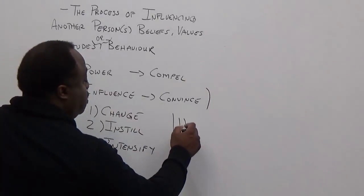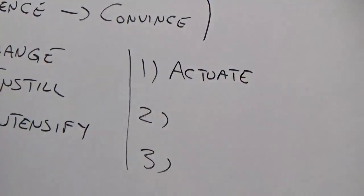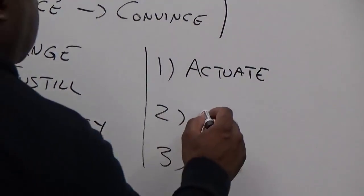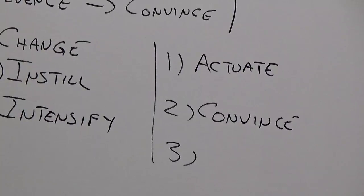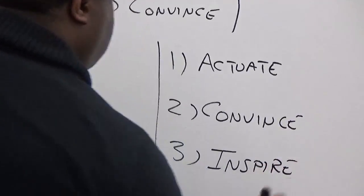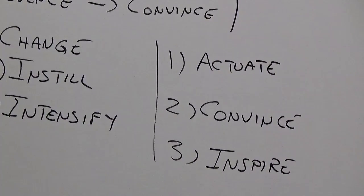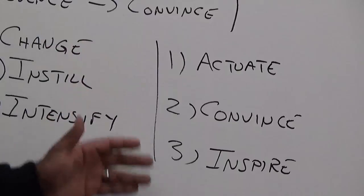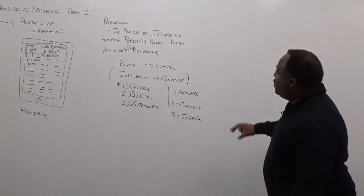The way we can do this is with one of three types of speeches. There's a speech to actuate, where we influence somebody's behavior. A speech to convince, where we go for how somebody thinks. And then there's a third one — a speech to inspire, where we try to impact how somebody feels. So, what is persuasion? It's influencing beliefs, behaviors, and attitudes by changing, instilling, or intensifying via a speech to actuate, convince, or inspire.